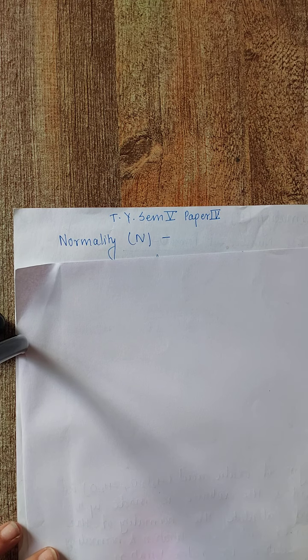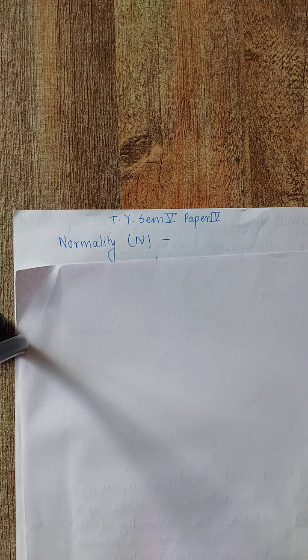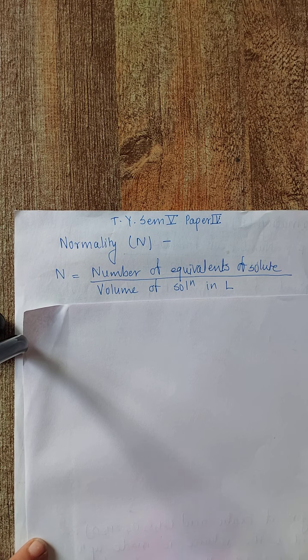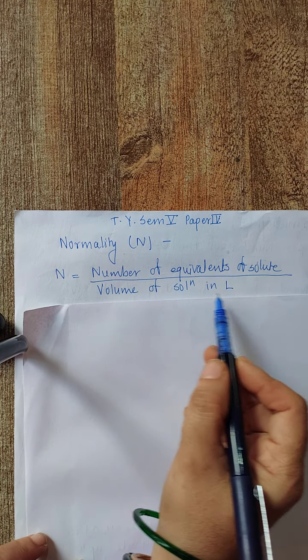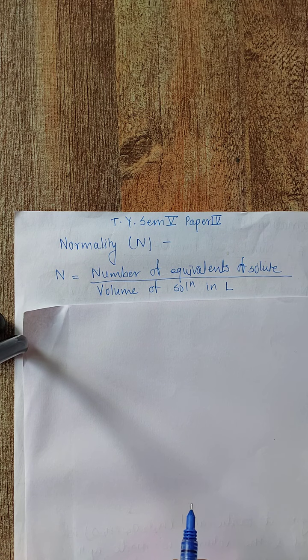Today we will discuss about normality. Normality of a solution is defined as the number of equivalents of solute present in one litre of solution. It is denoted by N, and we can say that normality is the number of equivalents of solute present in one litre or present in volume V of solution.